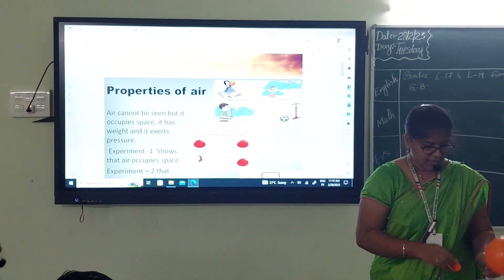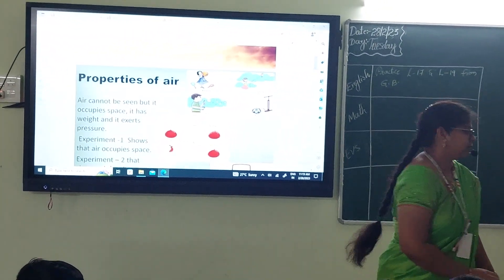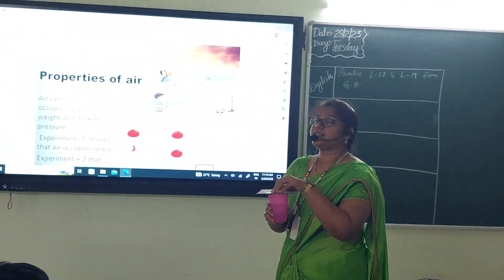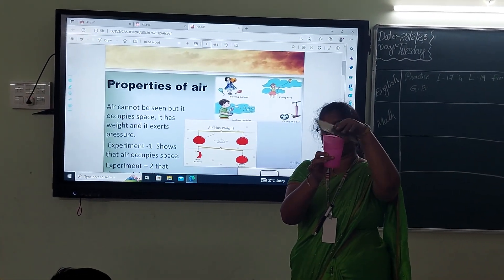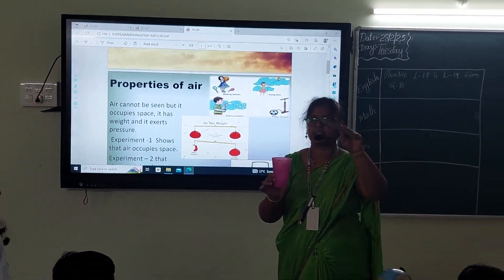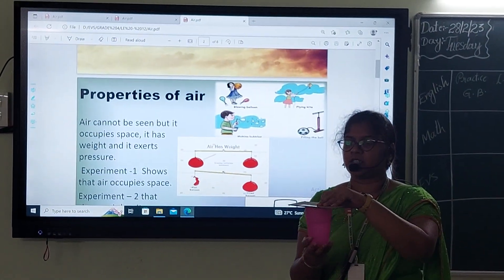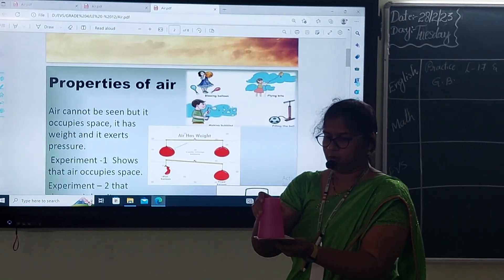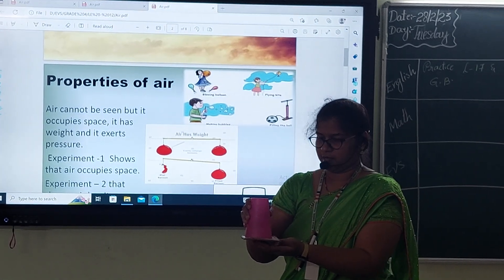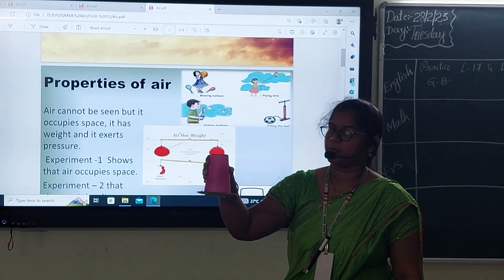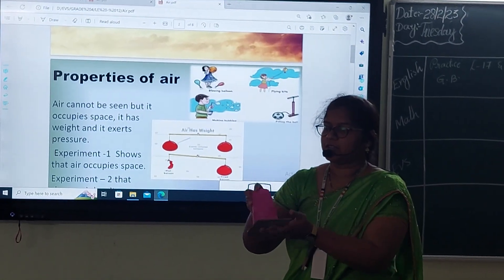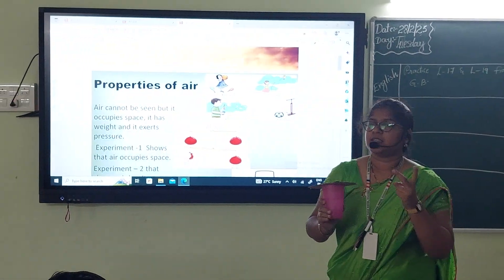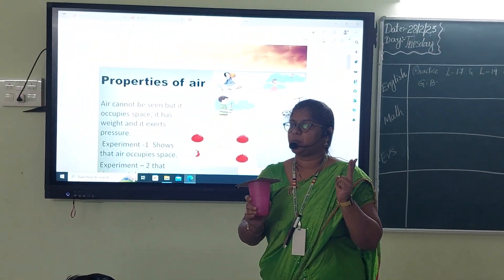Understood? These are the two properties. First one is: air occupies space. Second one: air exerts pressure. This is water — I take a glass of water and this is cardboard. Then I will turn it slowly. Air exerts pressure. So, these are the two properties: first, air occupies space; second, air exerts pressure.